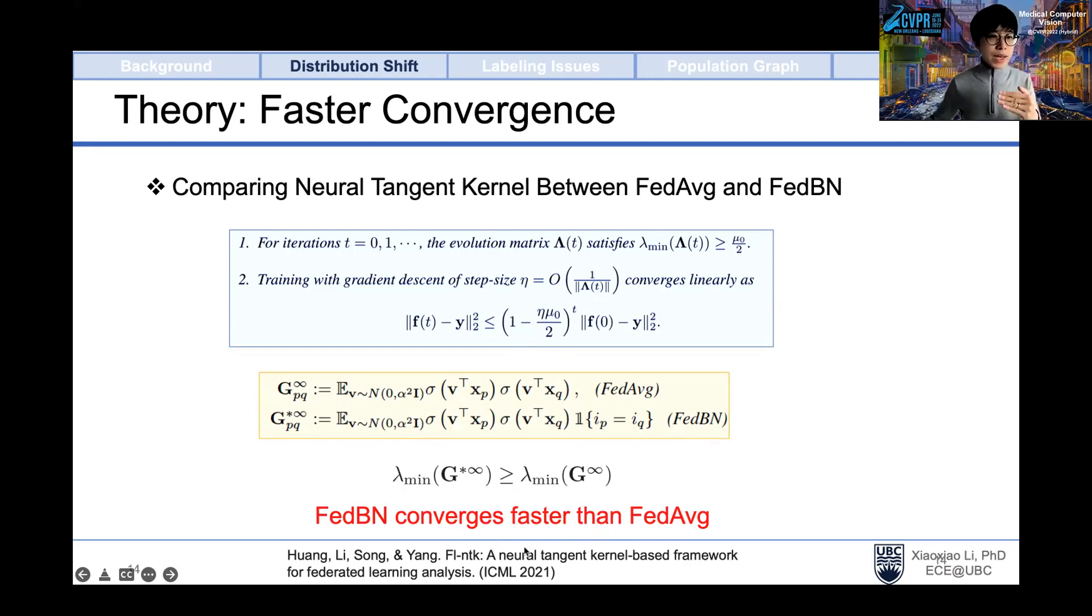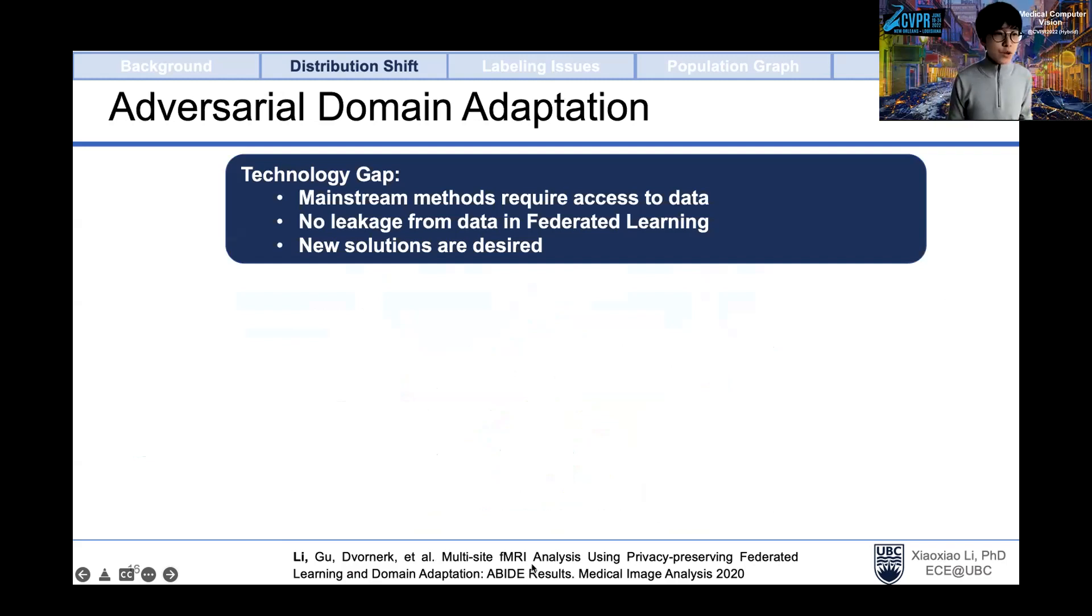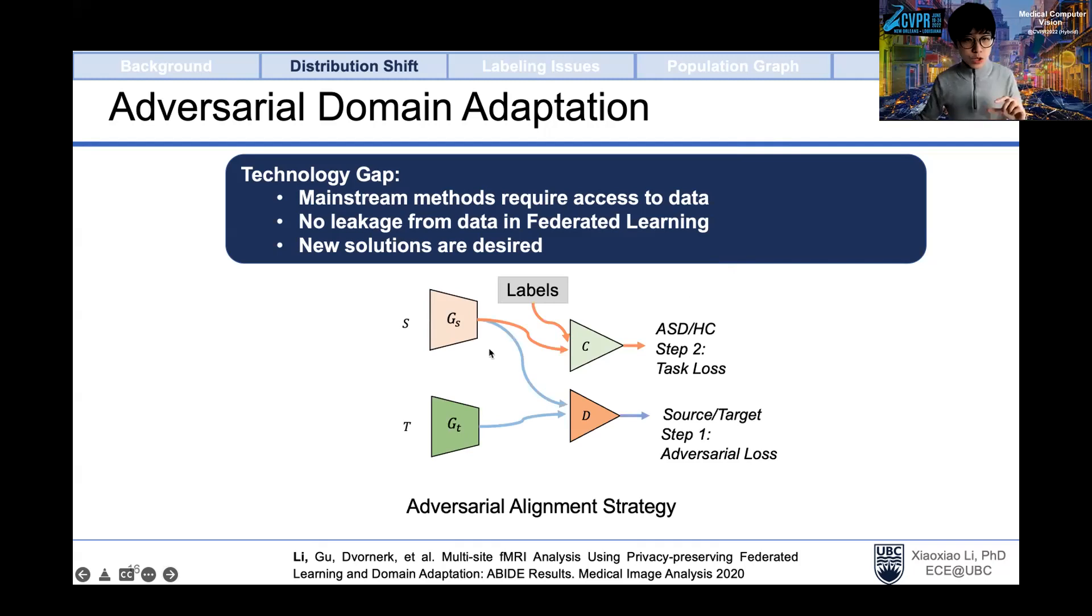In addition to keeping BN locally to tackle the distribution shift issue, we also have another more empirical solution by incorporating domain adaptation in federated learning. This is our work published in Medical Image Analysis. Different from traditional domain adaptation methods which mainly perform on the data domain, federated learning setting does not allow any data leakage, so traditional methods cannot fit. We propose an adversarial alignment strategy. For datasets in two different institutions in federated learning, we can treat one as the source domain and another as the target domain. We want to generalize the feature representation of the source domain to a common space of the target domain.